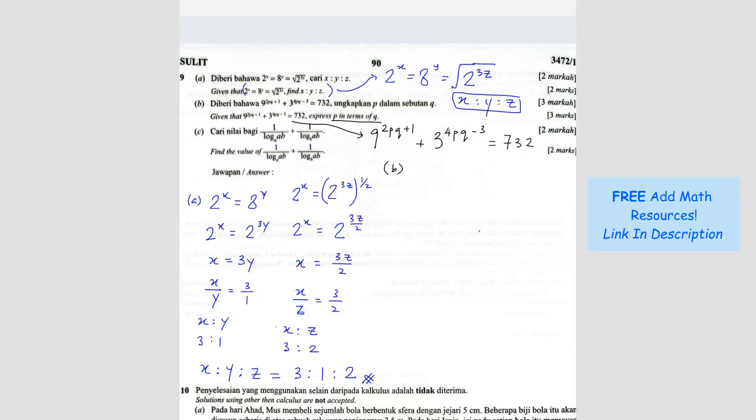What we can do is we can make it become the same base first. Change this to 3 square. So this one I have to times 2. So, 3^(4pq + 2) plus 3^(4pq - 3) equals 732. What you notice here is that both of these numbers, they got 4pq, 4pq. So we can factorize them.